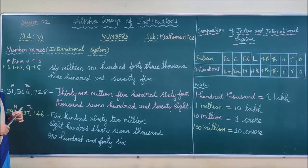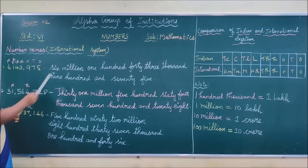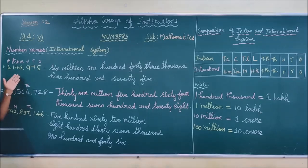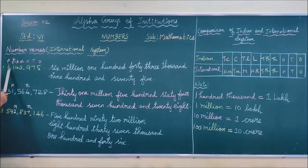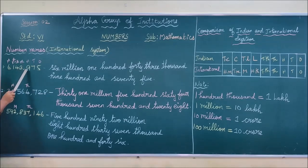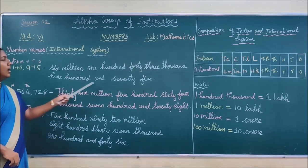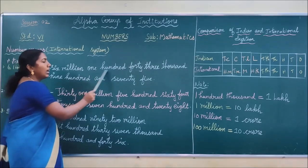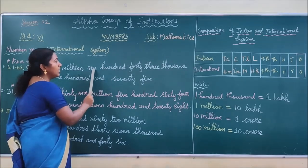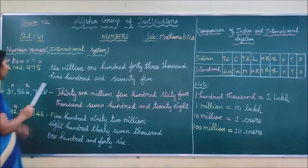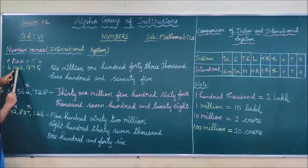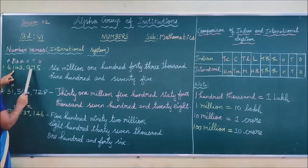Now we are writing the number names using the international system. See this example — we have already seen it in the place value chart. Read this number: 6 million, one period; 143,000, another period; and 975. When writing the number name, you use the conjunction 'and' here in the ones period only, not for millions or thousands. So: six million, one hundred forty-three thousand, nine hundred seventy-five.